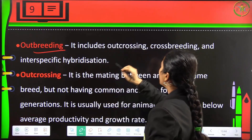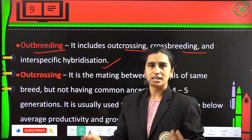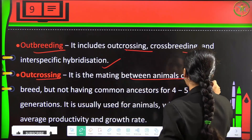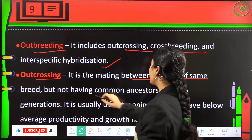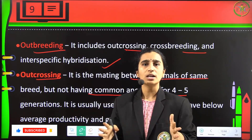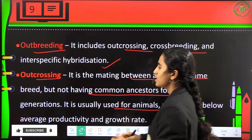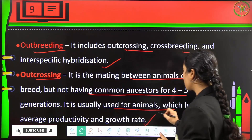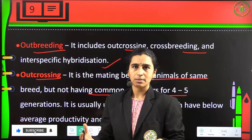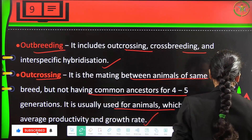Outbreeding includes outcrossing, crossbreeding, and interspecific hybridization. Outcrossing is the mating between animals of the same breed but without common ancestors for four to five generations. This is usually done for animals which have below average productivity and growth rate.